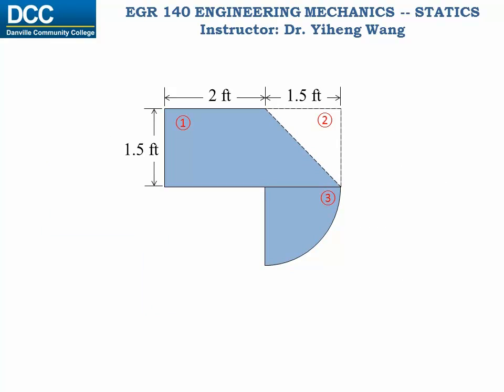Or, if you decide, this composite area can be considered as a bigger rectangle, minus a triangle, and then plus again a quarter of a circle. That is fine too. We again put the area into an x-y coordinate system, and find the centroid of each component area, again with respect to the same coordinate system.